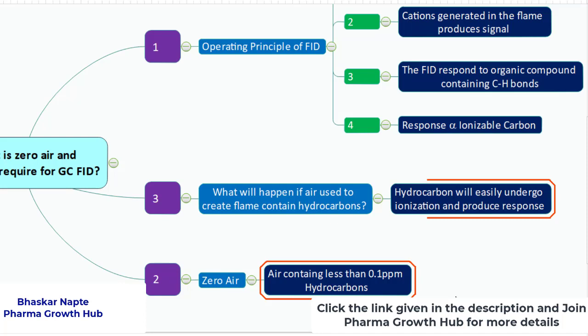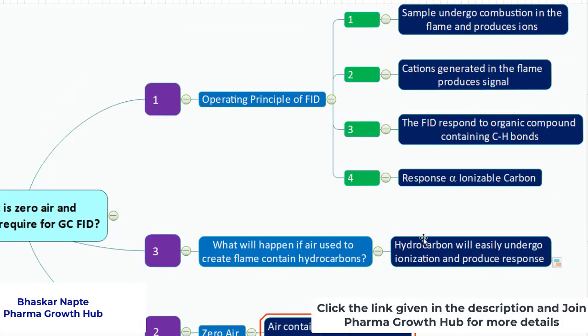So I hope you must have now understood what is zero air and why it is required for your GC analysis if the detection technique is flame ionization. If you want to receive such useful and informative information, you can join the Pharma Growth Hub. There is a link given in the description. Click on the link and join the Pharma Growth Hub WhatsApp group. Thank you so much.